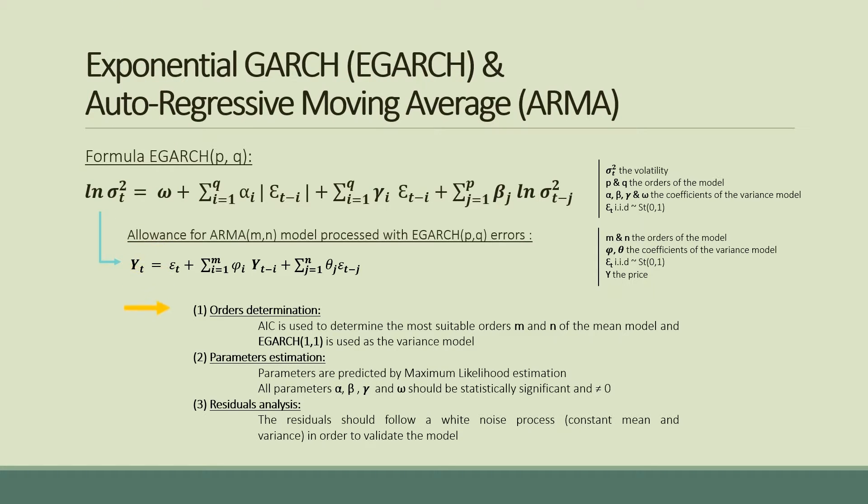First, the order M and N of the ARMA model are determined by AIC information criterion, and the EGARCH(1,1,1) is chosen for the variance prediction.